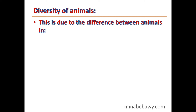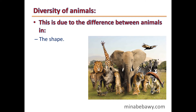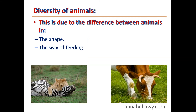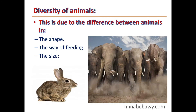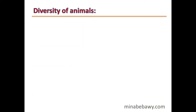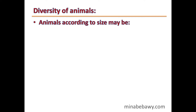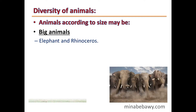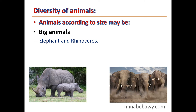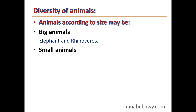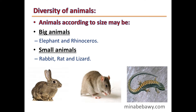Diversity of Animals. This is due to the difference between animals in their shape, way of feeding, and size. Animals according to size may be big animals such as elephant and dinosaur, or small animals such as rabbit, rat and lizard.